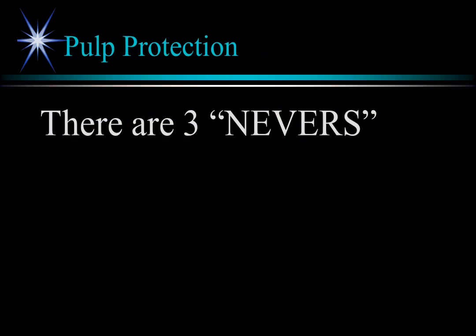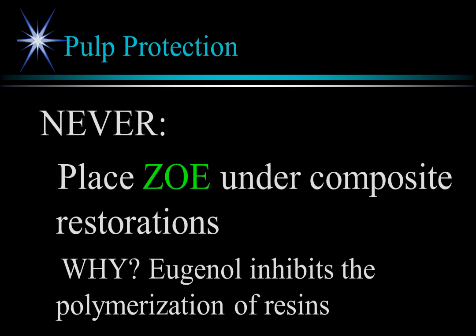There are several things to avoid when using liners and bases in restorative procedures. Never use zinc oxide eugenol materials — trade name IRM, intermediate restorative material — under a composite restoration, because the eugenol inhibits polymerization of resins.